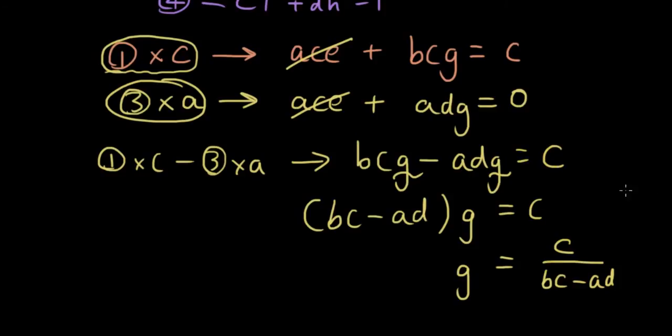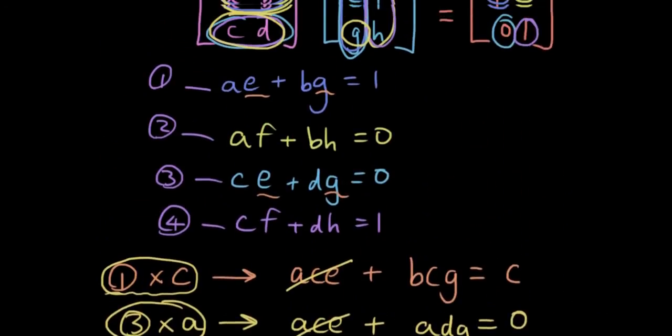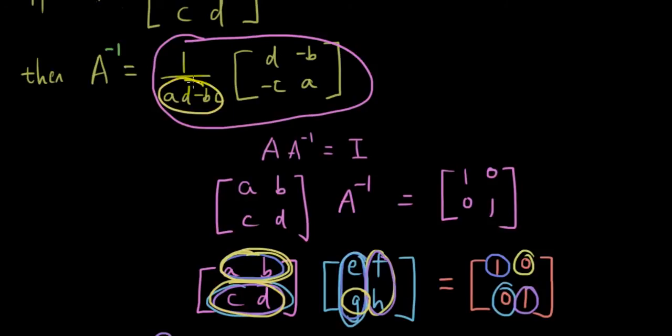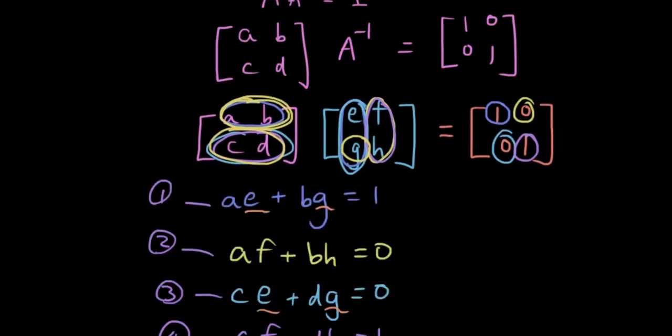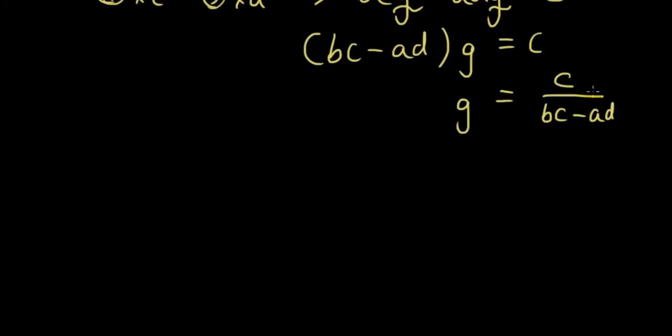You will see that this is getting pretty close to our formula here at the front where we have AD minus BC down the bottom. So in order to get that, what I'm going to do is multiply both the top and the bottom of this fraction by negative 1. And then I will get G equals negative C over AD minus BC, because BC times negative 1 is negative BC, and negative AD times negative 1 is positive AD. So then I get G equals negative C over AD minus BC.